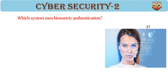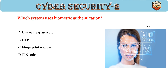Which system uses biometric authentication? Answer: C. Fingerprint scanner. Biometrics include fingerprints, iris, and face. Provides unique and strong authentication. Often combined with MFA for security.